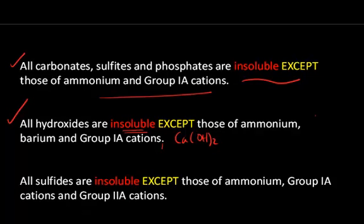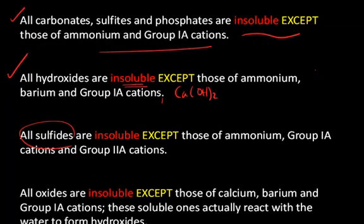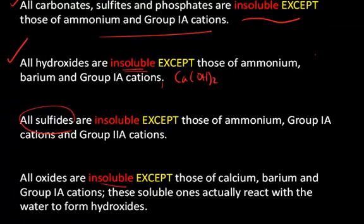All sulfides are insoluble except those of ammonium, Group 1A cations, and Group 2A cations. You need to remember that sulfide is S2⁻. All oxides are insoluble except those of calcium, barium, and the Group 1A cations — these soluble ones actually react with water to form hydroxides and end up acting as bases in water as well.